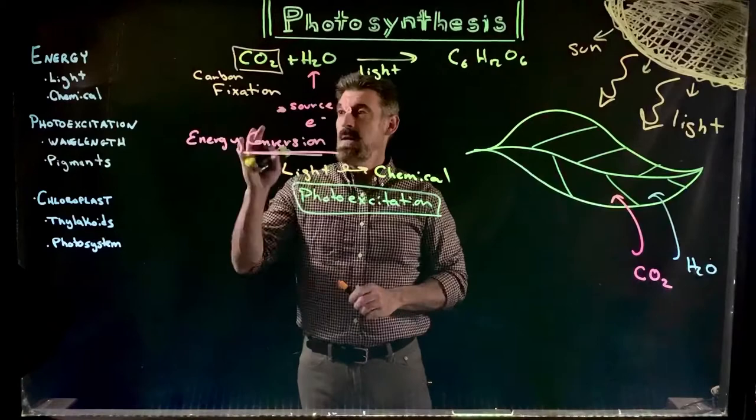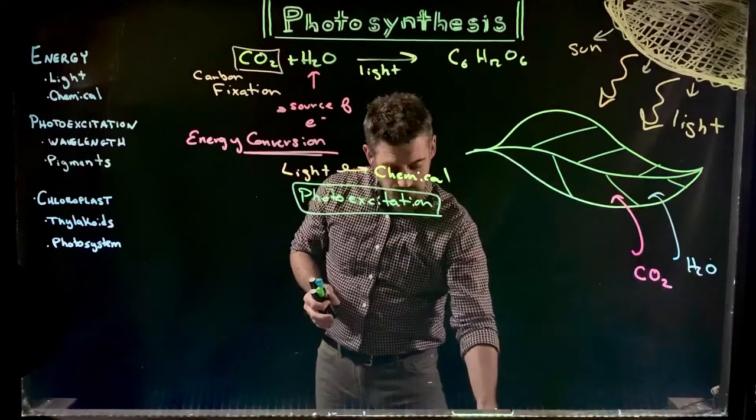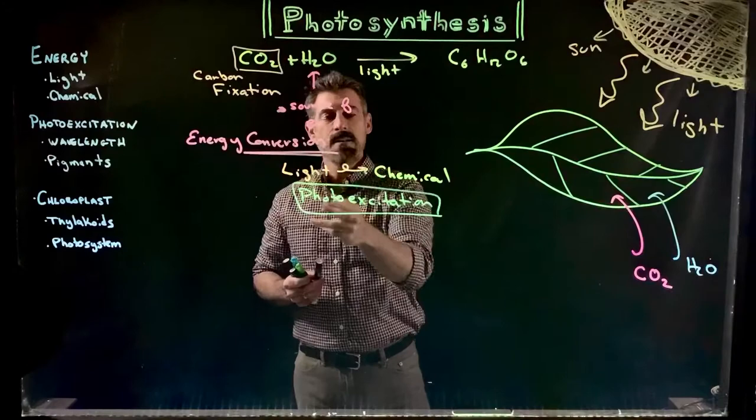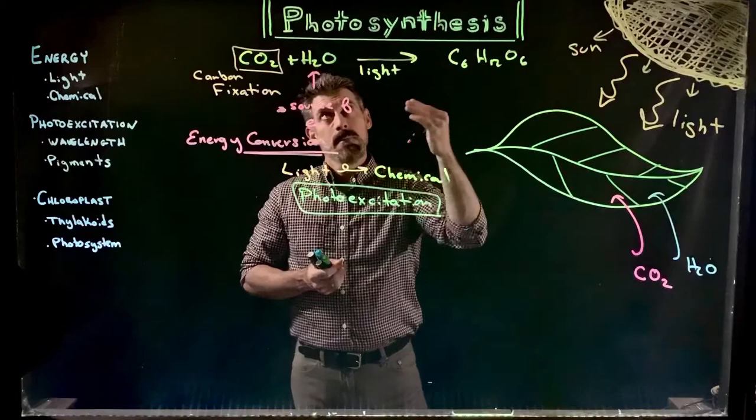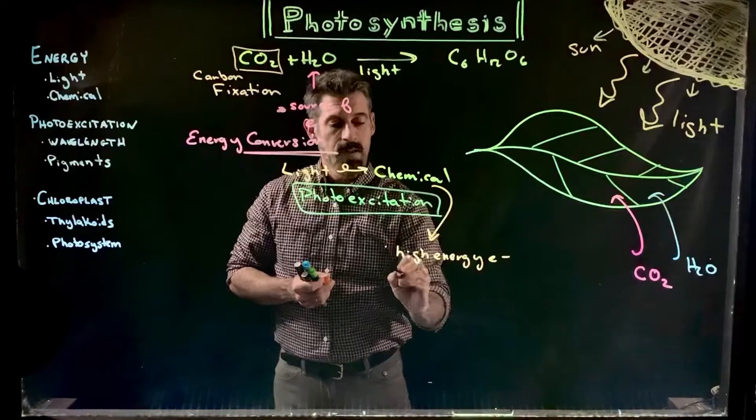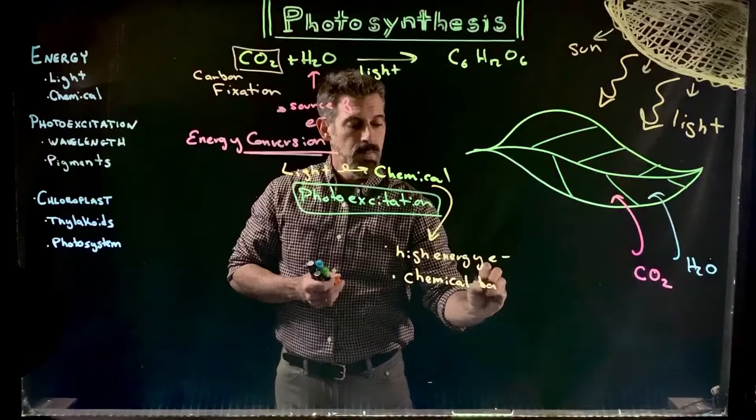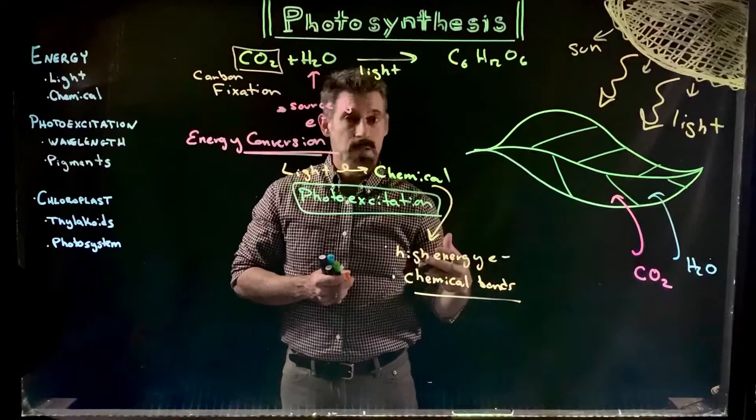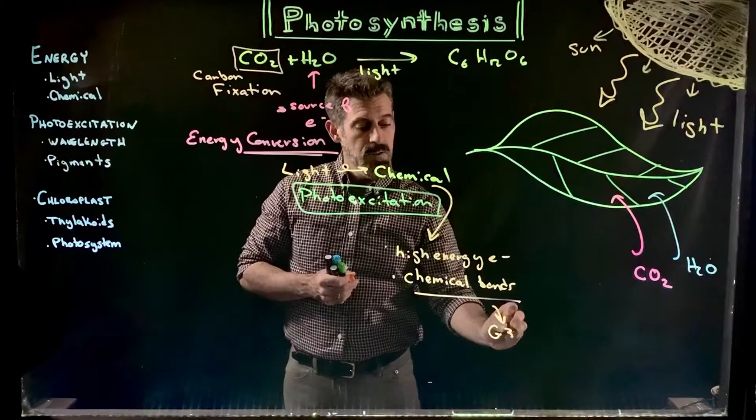So we'll kind of get into this now a little bit about the overview. We'll get into the wavelengths because that's going to be the start of it. So we're getting the energy conversion of light energy to chemical. The chemical energy is really going to be energy in electrons. We're going to talk about high energy electrons, and then we're talking about chemical bonds. And that's really where the energy is going to be stored. And those chemical bonds are going to be found in molecules that are actually produced by the reactions of photosynthesis, which are going to be the molecule G3P.